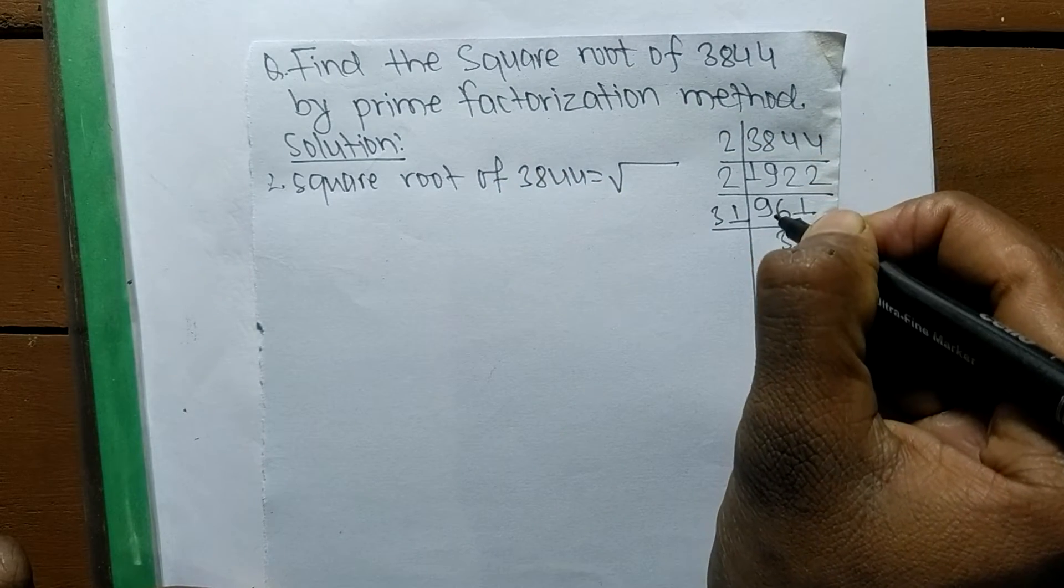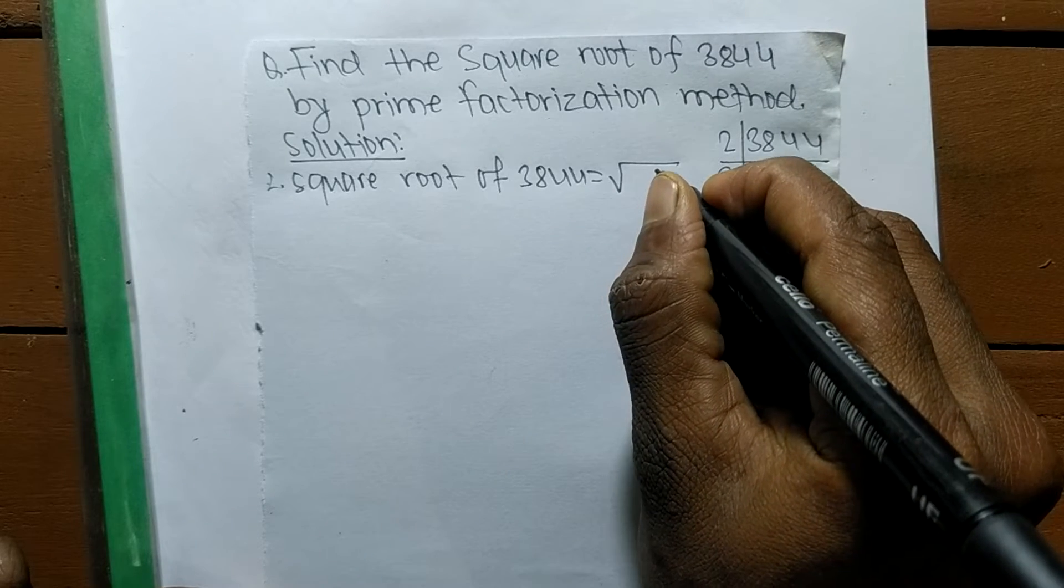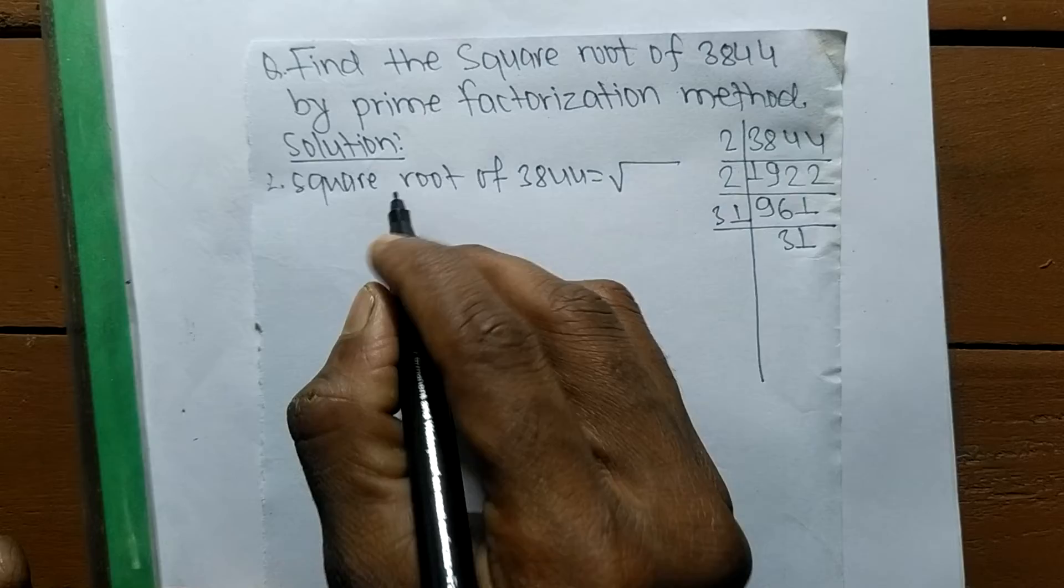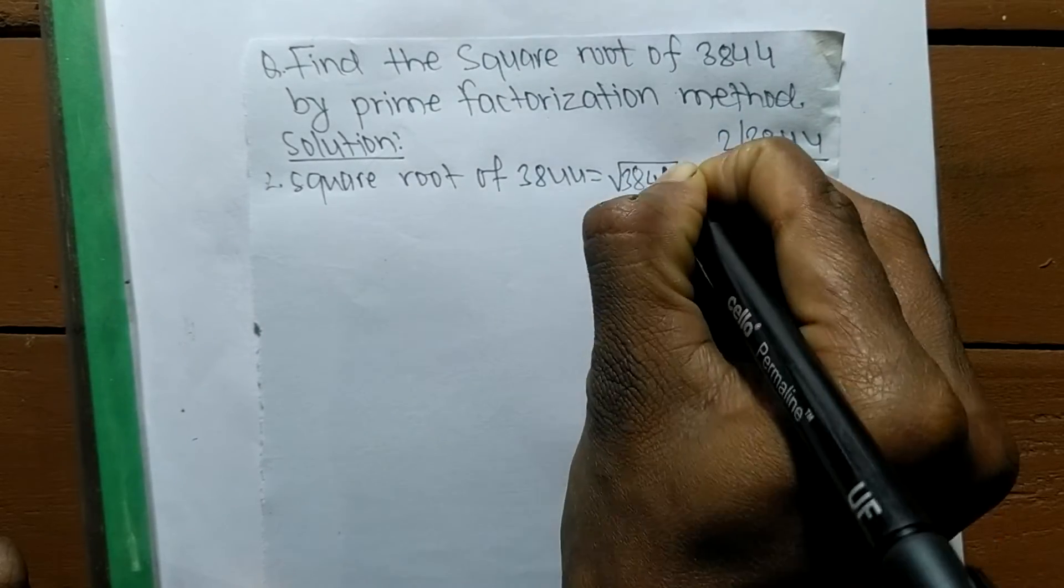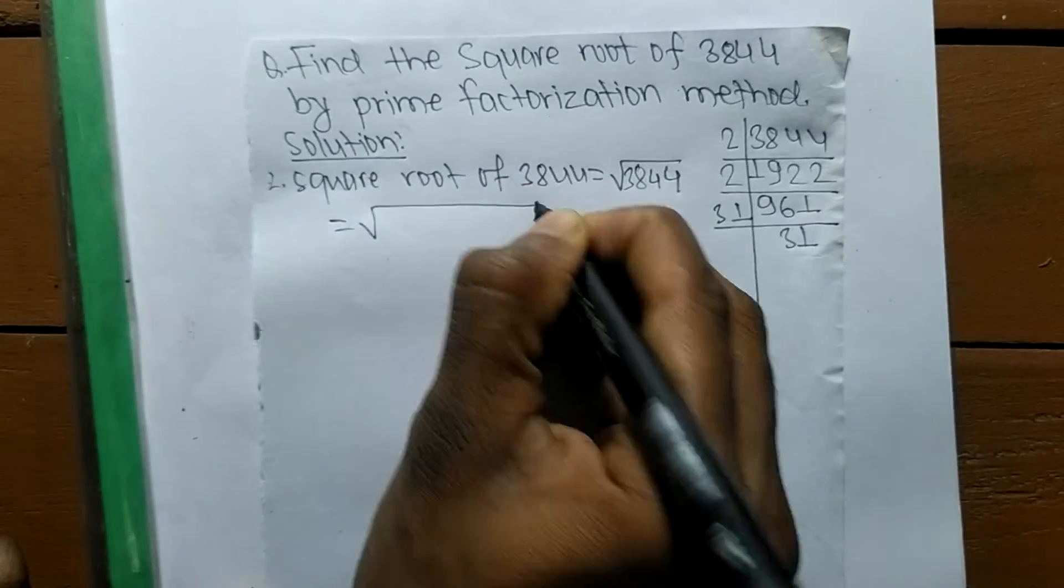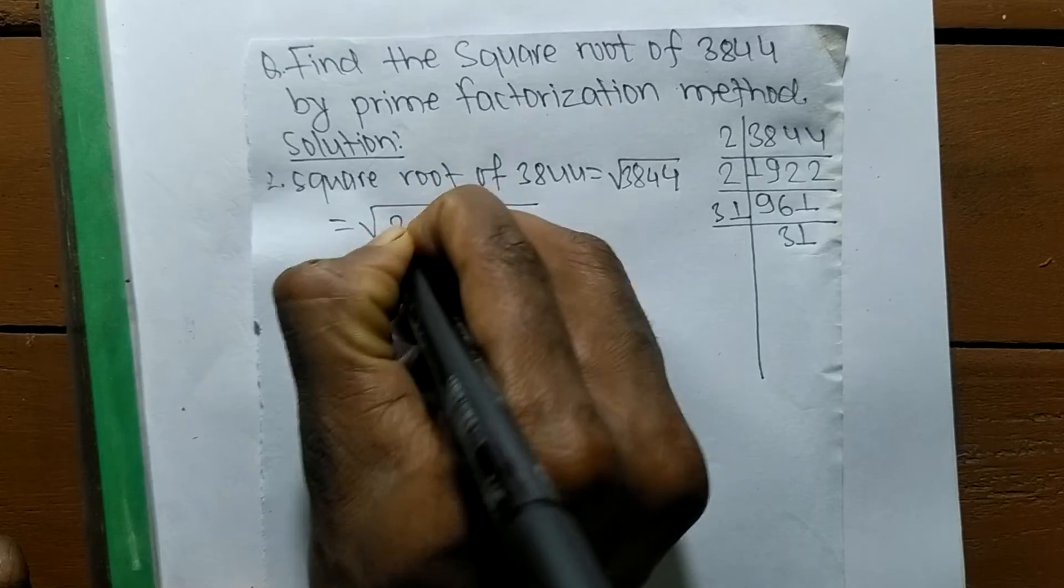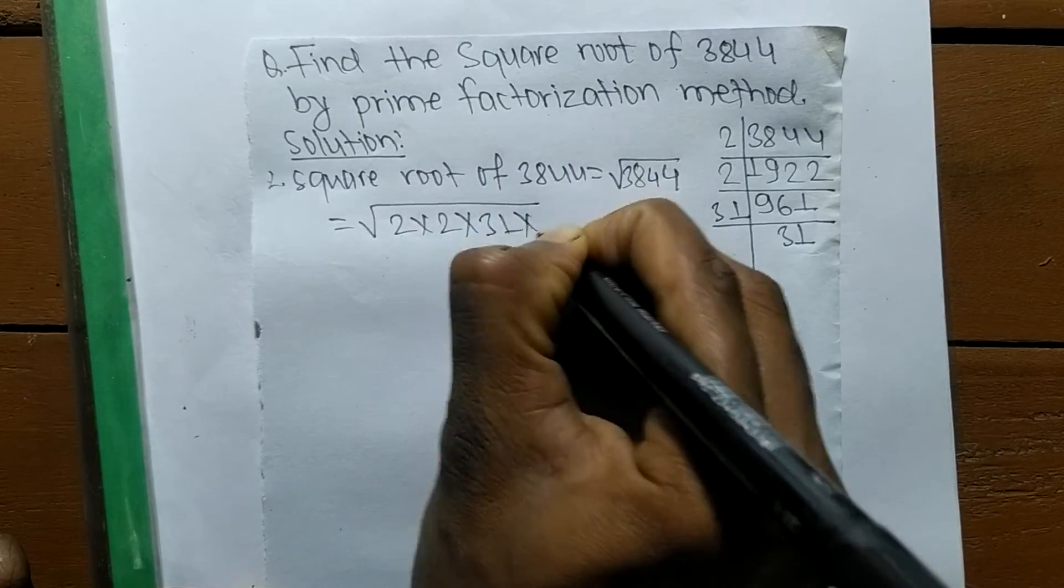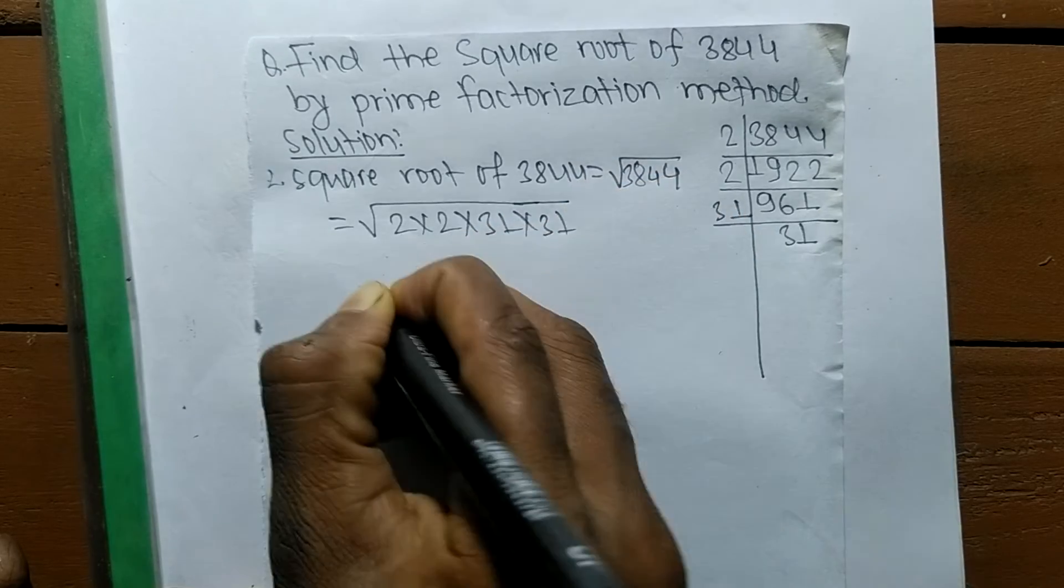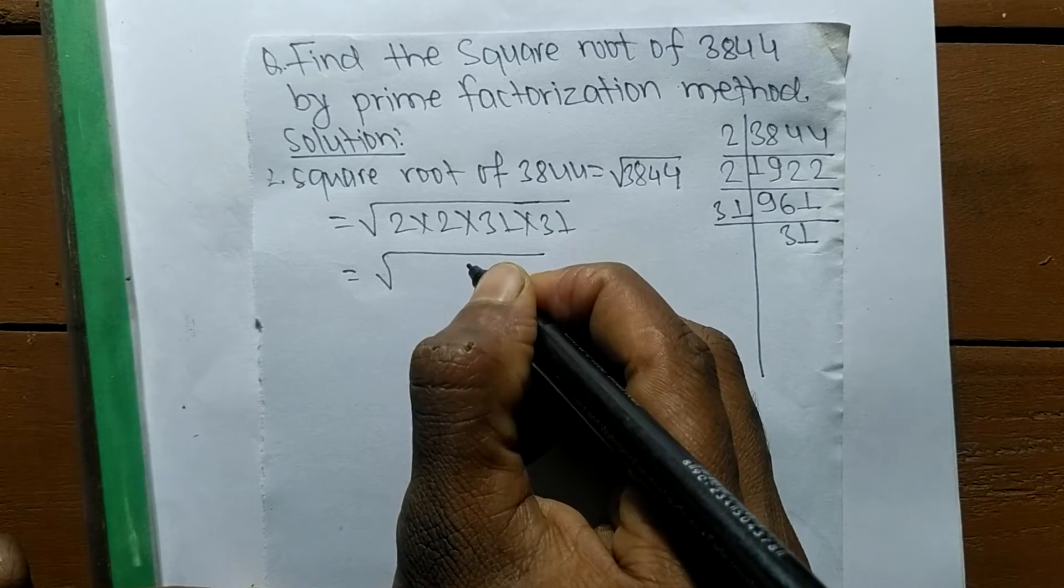Now the square root of 3844 - we have found the prime factors and now we find the square root. This is the sign of a square root, and we are finding here the square root of 3844. The prime factors of 3844 are 2 times 2 times 31 times 31.